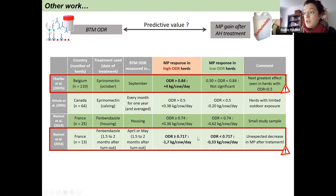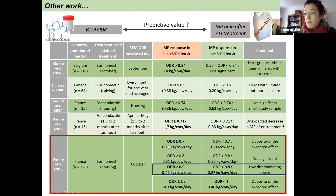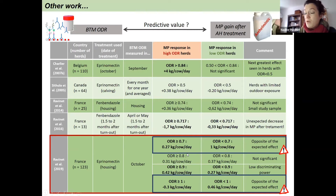In another study, the effect of treatment was negative — that is to say, a decrease in milk production was observed after anthelmintic treatment, this decrease being significantly higher in high ODR herds. In the last study, several thresholds of ODR values were tested on the same dataset. The threshold of 0.9 could be seen as interesting, even if the discriminatory power was very low. Furthermore, the relationship between ODR value and milk production response was not linear — for thresholds of 0.7 and 1.0, exactly the opposite of the expected effect was obtained, with higher milk production response in low ODR herds.